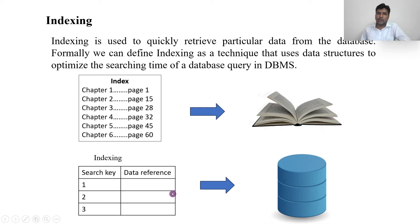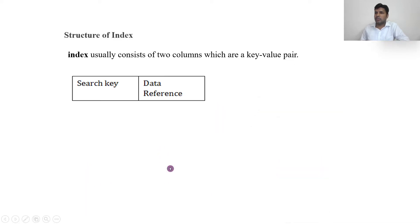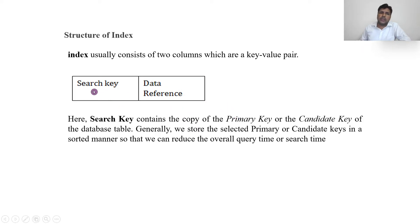Before discussing types, let's look at the structure of an index. We have already seen that the structure contains two columns: one is the search key and the second one is the data reference. So the index usually contains two columns — a key-value pair. One column contains the search key and the second contains the data reference. The search key contains a copy of the primary key or candidate key — that is, whatever data you want to search, that key will be available in the search key. Generally, we store the selected primary or candidate key in a sorted manner so that we can reduce the overall query time and search time.